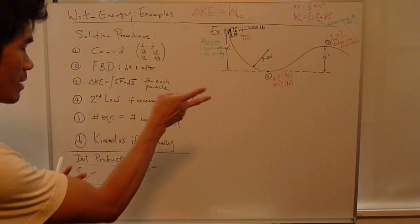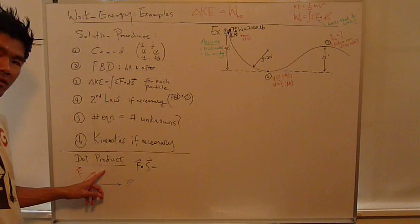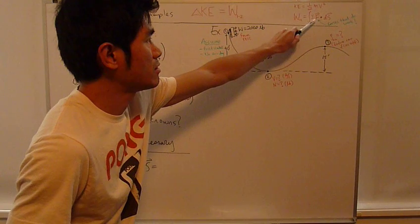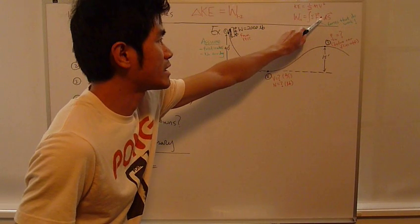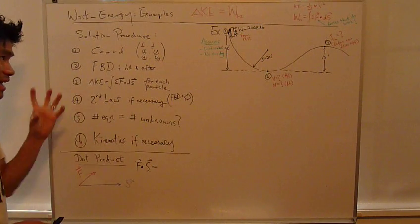Now, before we get into an example, I want to explain a little bit about dot products. So, here we have force dot ds. Force vector dotted with this change to position vector. What does that mean physically?